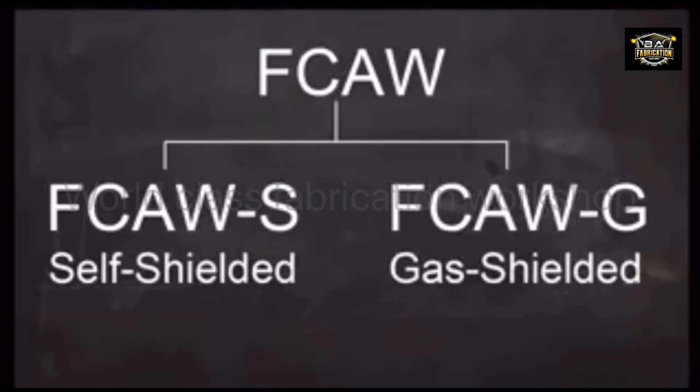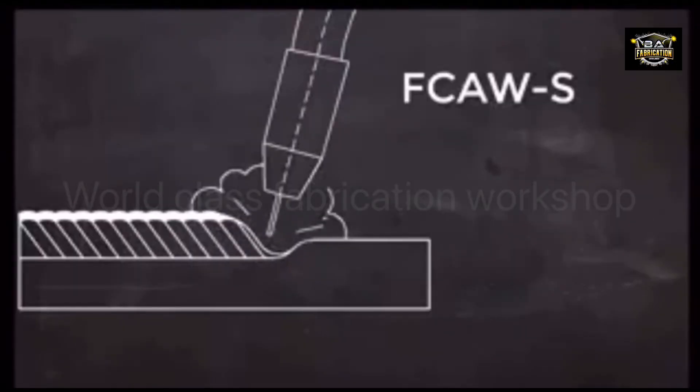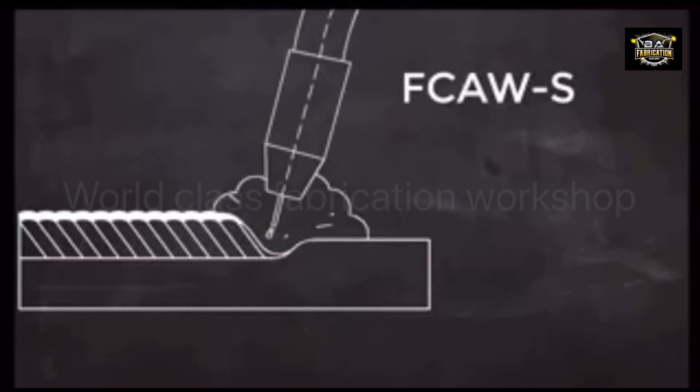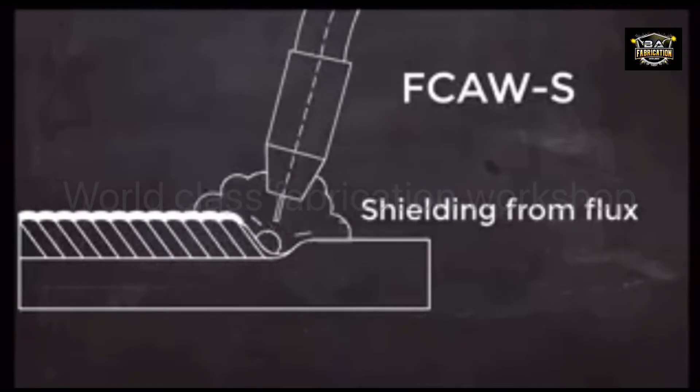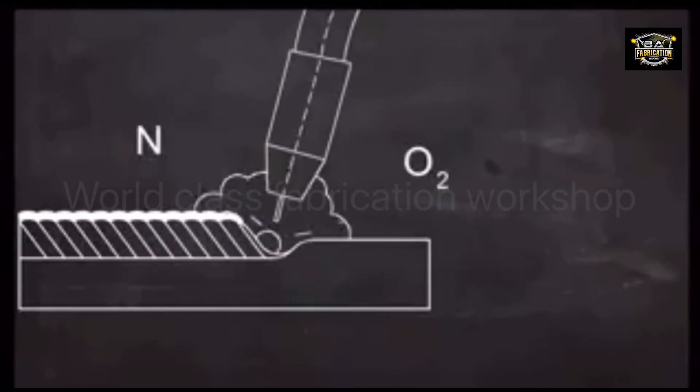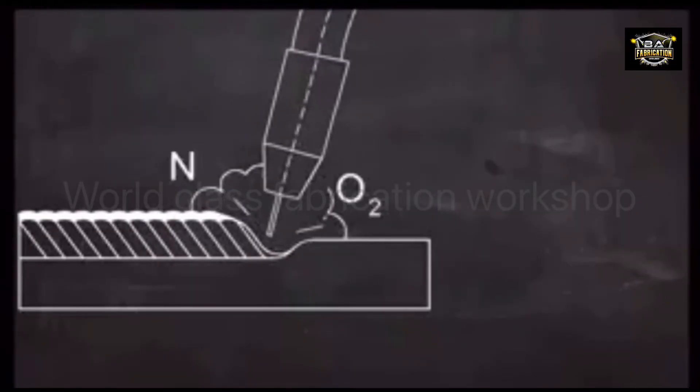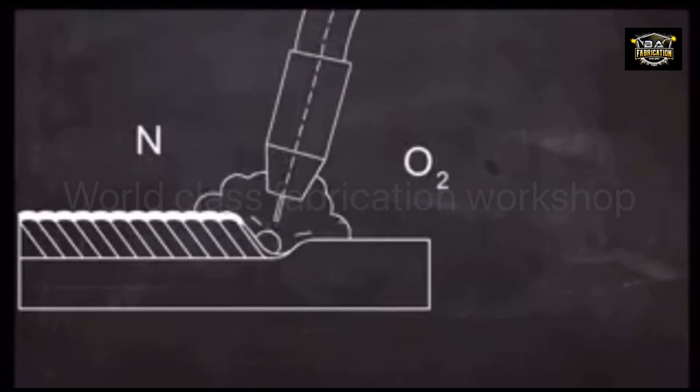You need to be sure you're using the wire in the way that it was designed to be used, because the chemistry behind these two processes is different. Flux-core electrodes that are designed to be self-shielded contain a flux that completely protects the molten weld pool. The flux in these electrodes creates a protective cloud that prevents gases like nitrogen and oxygen from reacting with the hot metal.